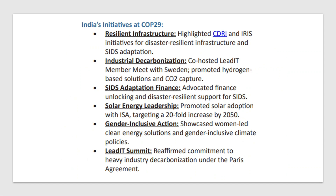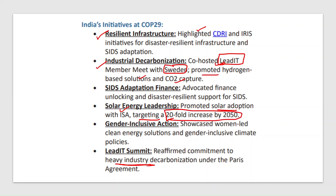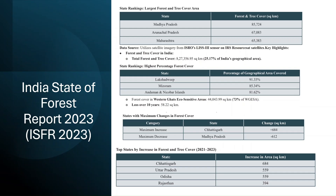India also proposed initiatives at COP29: resilient infrastructure, highlighting the importance of climate and disaster-resilient infrastructure for adaptation; and industrial decarbonization, where India is leading the LEAD IT scheme to decarbonize the heavy industry sector in collaboration with Sweden. India also promoted hydrogen-based solutions and CO2 capture and storage, solar energy leadership through the International Solar Agency targeting a 20-fold increase by 2050, and a gender-inclusive clean energy and climate policy for achieving net zero.